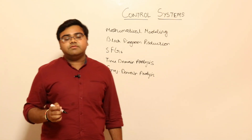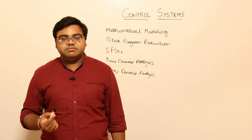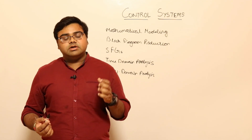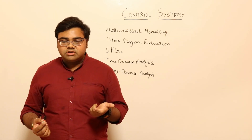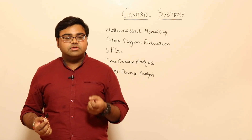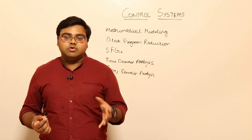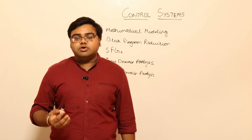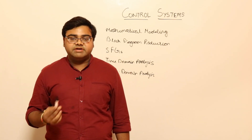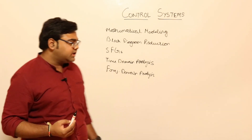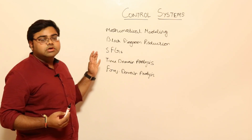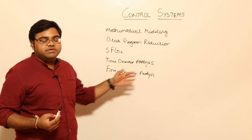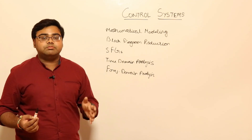In frequency domain analysis, we first find parameters for a standard second order system, then move into three crucial topics: Polar Plots, Nyquist Plots, and Bode Plots. We will see in detail when each can be applied, what parameters are used to judge stability, and how to compute Phase Margin and Gain Margin without confusion in each case.